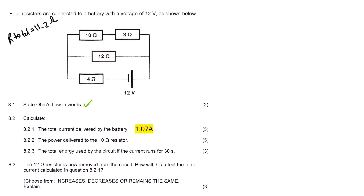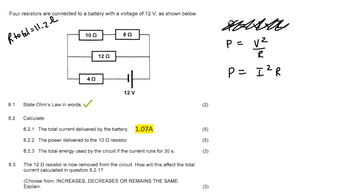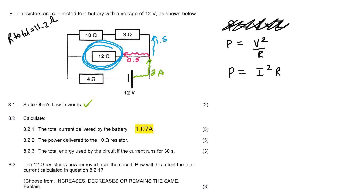Question 8.2.2 says: the power delivered in the 10 ohm resistor. We know that power is voltage multiplied by current. It also has the formula V²/R, and the formula I²×R. Because we know the resistance of this one, I would definitely not try to use V×I — that would take too long. The nice way to do this: we know that if you've got current flowing over here, some of that current is going to go this way and the rest will go that way.